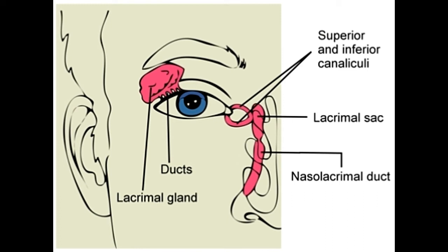The nose secretes them in its fluids. When you wake up, there is a mucus-like substance called rheum accumulated in the inner corners of your eyes. This is the dirt and dust cleared out from the cornea's surface throughout the day.